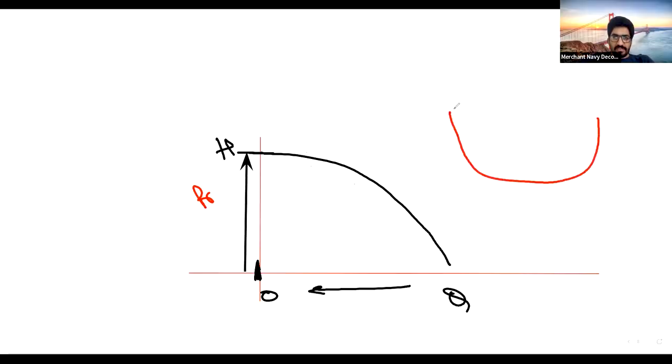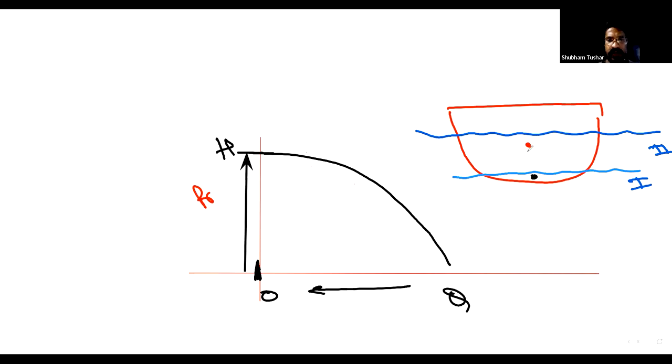So you see this. This is ship. And let's say that in one condition, this is condition number one and second is condition number two. So when you are in condition number one, what is the center of buoyancy? Somewhere here? Yes, sir. And in second case, the center of buoyancy will be higher. Somewhere higher.